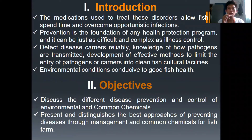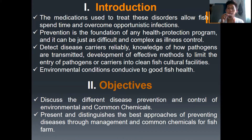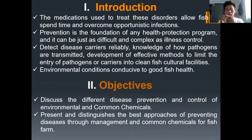For the introduction, the medications used to treat these disorders allow fish to spend time and overcome opportunistic infections. Prevention is the foundation of any health protection program, and it can be just as difficult and complex as illness control. Detecting disease carriers reliably requires knowledge of how pathogens are transmitted, development of effective methods to limit the entry of pathogens into clean fish culture facilities, and maintaining environmental conditions conducive to good fish health. The objectives are to discuss the different disease prevention and control methods using environmental and common chemicals, and to present and distinguish the best approaches of preventing disease through management and common chemicals for fish farms.